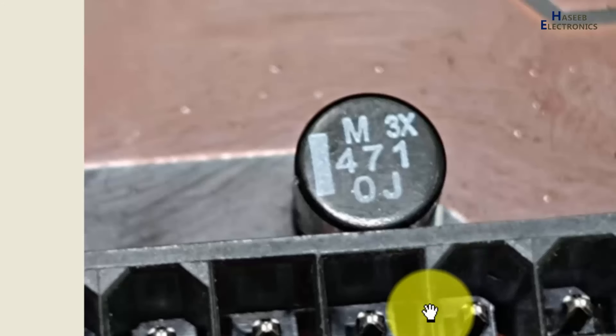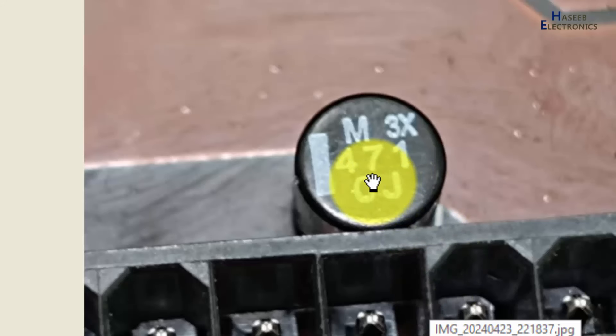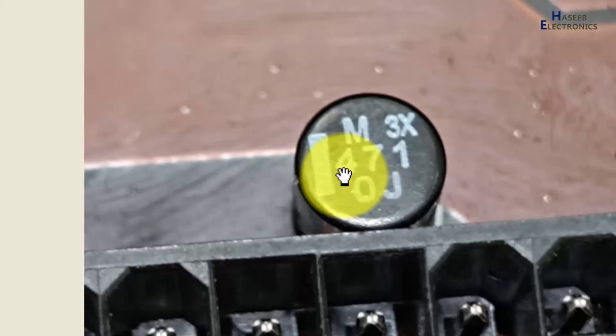And he sent me this email. Basically, it is EIA code. In this EIA code: tolerance, lot code, then 471—this is the capacitance code. Here is the polarity marking.